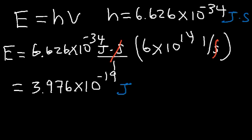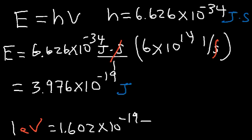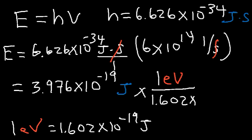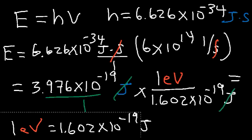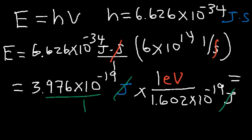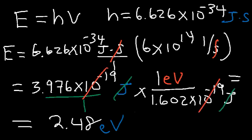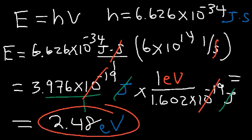Sometimes you can express photon energy in electron volts. One electron volt equals 1.602 × 10⁻¹⁹ joules. To convert joules to electron volts, divide by 1.602 × 10⁻¹⁹ so that the joules unit cancels. Dividing 3.976 by 1.602 gives 2.48 electron volts; the 10⁻¹⁹ terms cancel. Now you know how to convert wavelength to frequency, frequency to energy, and joules into electron volts. Thanks for watching and have a good day.